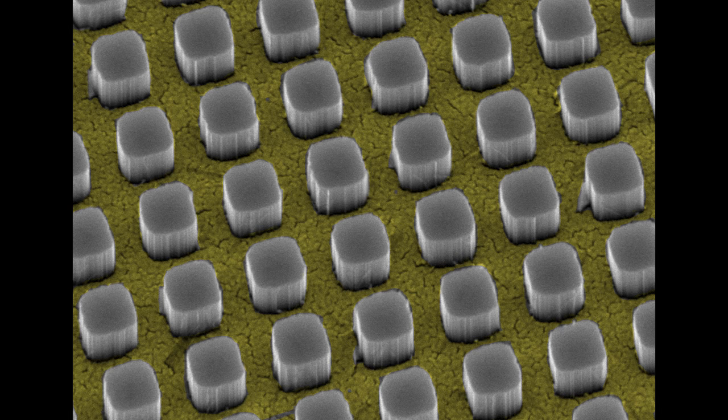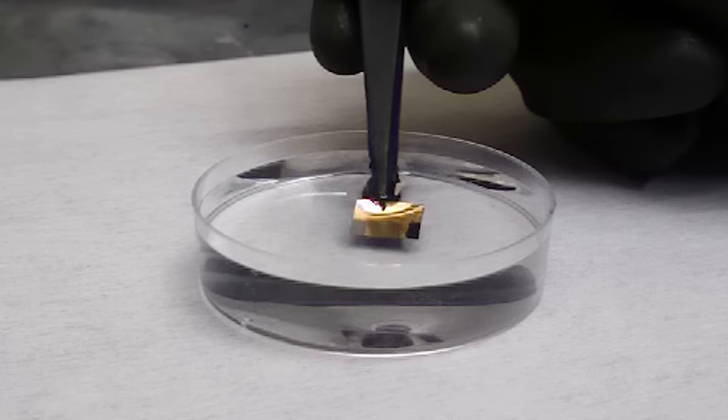As soon as the nanopillars start popping out, there's a dramatic color change in the surface. It goes from clear to red to dark purple, and this indicates that the wires are starting to be hidden from incoming light.